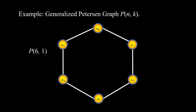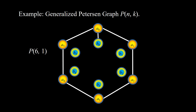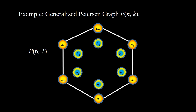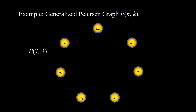Next we construct P(6,1): the cycle C6, B vertices, and the BB edges go from each B to the next B. So this is P(6,1). Next we construct P(6,2): the cycle, B vertices, AB edges, and with K equal to 2, the BB edges are B0–B2, B1–B3, B2–B4, B3–B5, B4–B0 (B6 mod 6), and B5–B1.